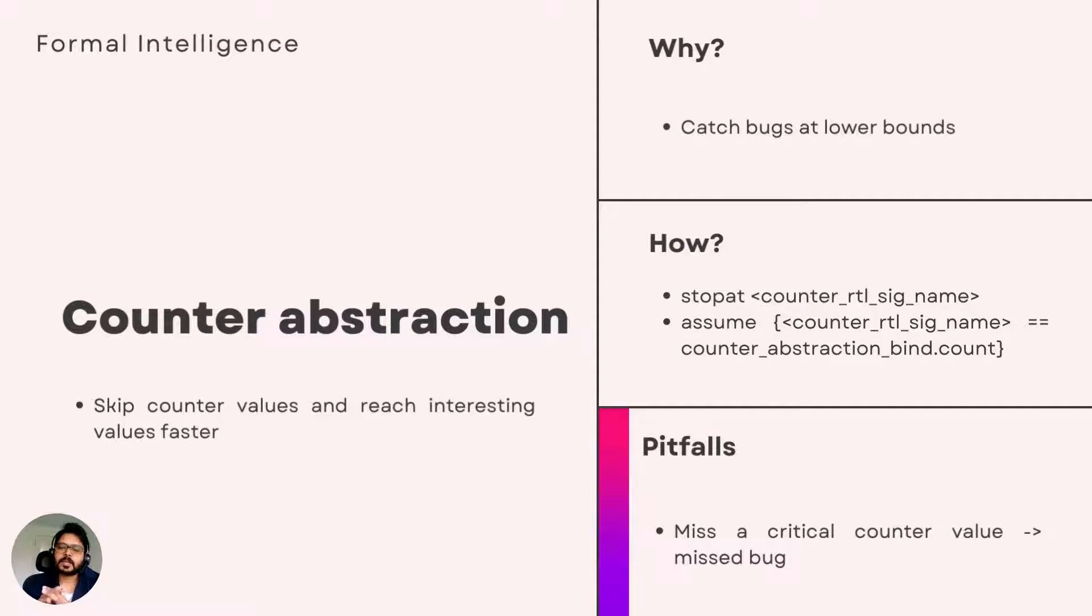So what is counter abstraction? It is simply a way of replacing a long counter with a smaller model that is sufficient for the functionality under verification. This leads to shorter counter examples that obviously leads to catching bugs faster.